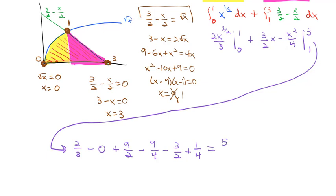So we have 2 thirds minus 0 plus 9 halves minus 9 fourths minus 3 halves plus 1 fourth. Plugging that into our calculator, we get a total area of 5 thirds.